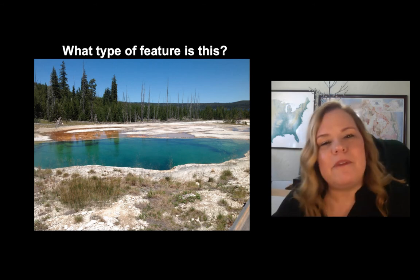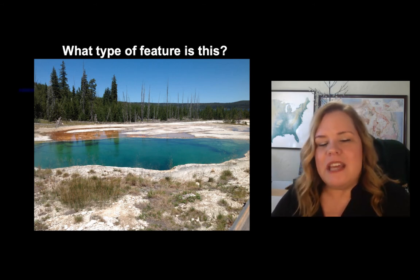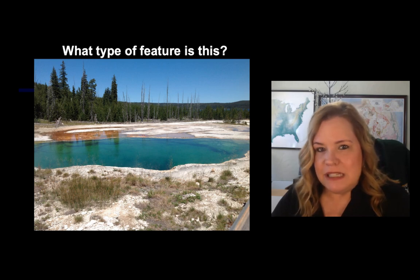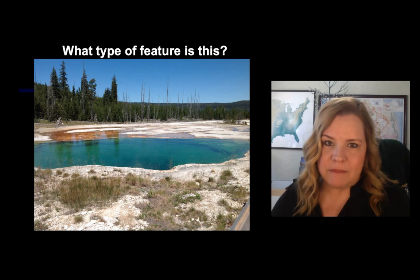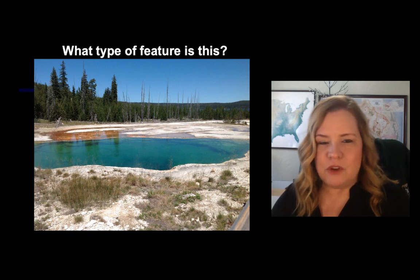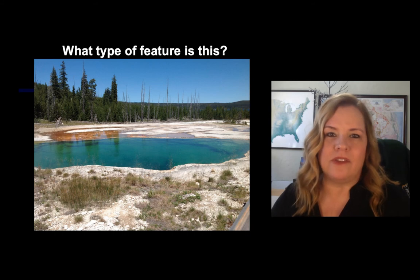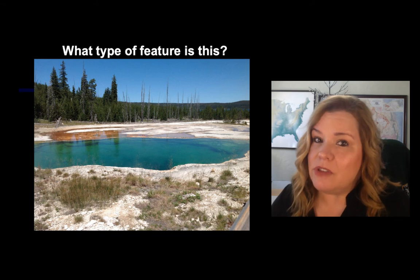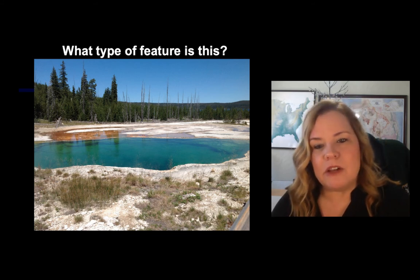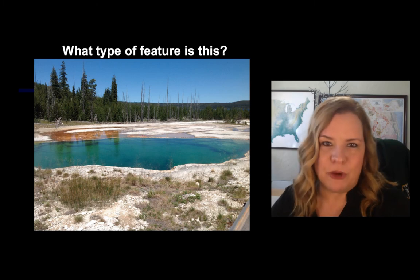See if you can guess what type of feature this is. I don't see any evidence of eruptions — it's extremely hot. Is it a fumarole, a mud pot, a hot spring, a cone geyser, or a fountain slash pool geyser? The key is to look for geyserite material on the outside. I don't see that — this is a hot spring.